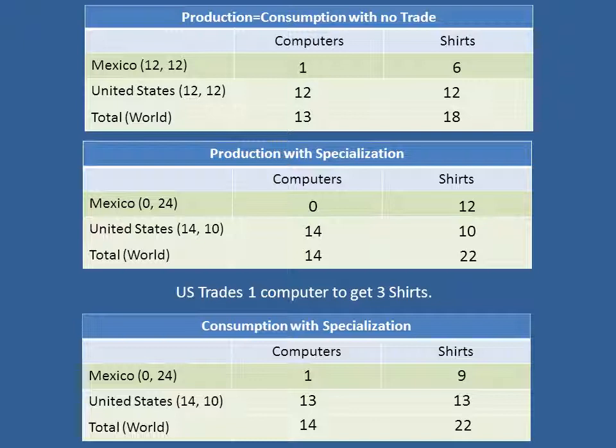One thing to keep in mind is that absolute advantage, although it doesn't explain trade, it does explain how wealthy countries are. Even with trade, notice that Mexico is still considerably less wealthy than the United States — total production in Mexico is one computer and nine shirts compared to the United States with 13 computers and 13 shirts. Absolute advantage does explain which countries in the world are rich. But comparative advantage explains why it makes sense to trade and what goods it makes sense to trade. For more on this, I invite you to take a look at my textbook with Tyler, Modern Principles of Economics. Thanks.